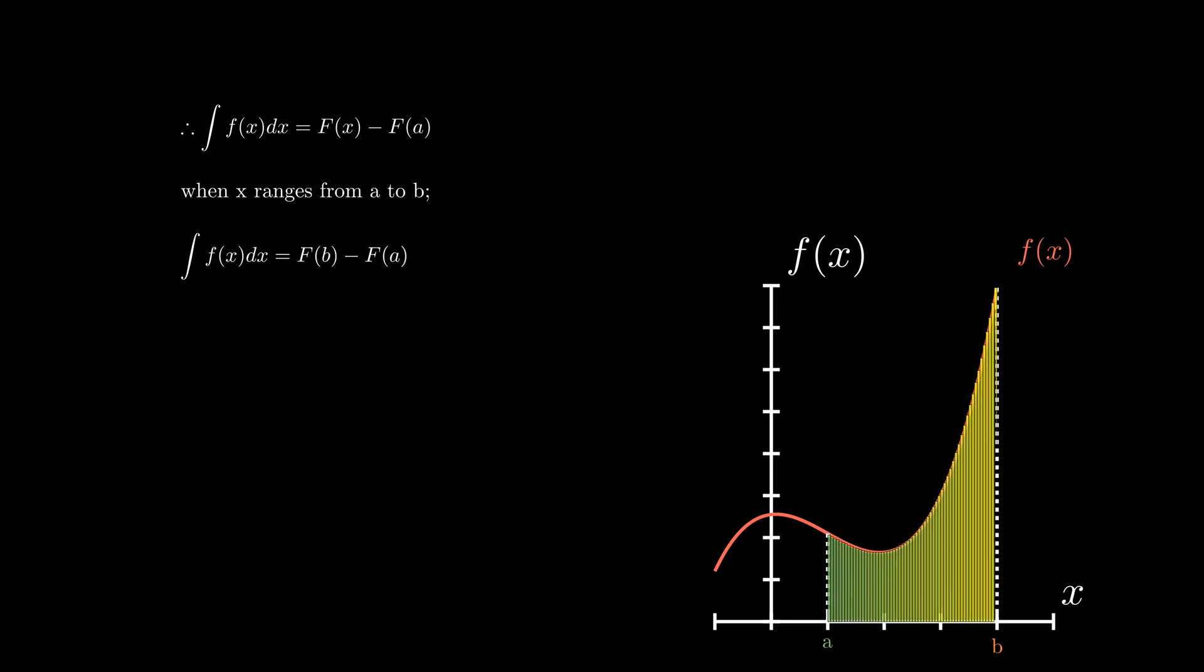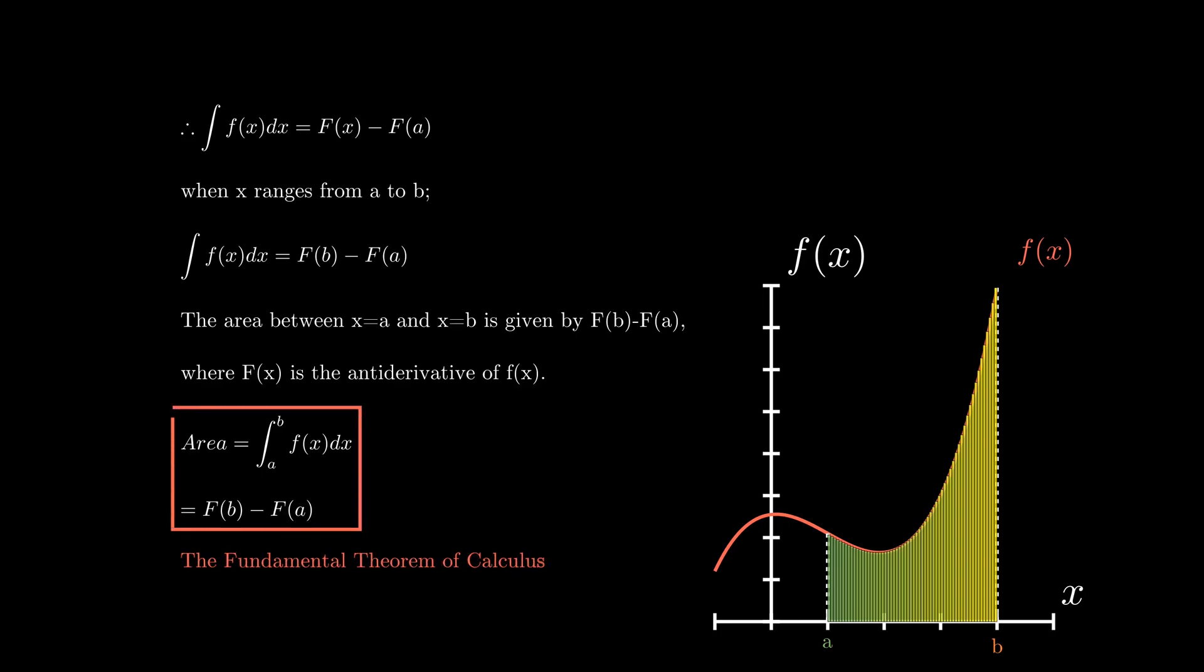If we consider the area from a to b and substitute b in as our upper bound, it can be seen that the area under the curve is the difference between capital F of b and capital F of a. This capital F of x function is obtained by evaluating the anti-derivative of the function you are considering the area of. This is known as the fundamental theorem of calculus.